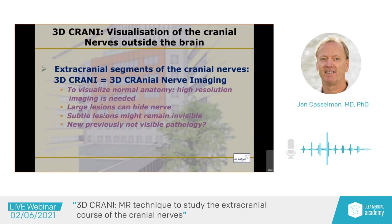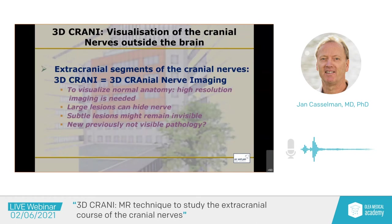But another problem is we see new things — new hyperintensities. This is pathology that was not seen previously; we couldn't see it. And now very often we come with these results and say: look at that nerve, it's completely abnormal. But now the clinicians have to find out what they're going to do with it. So now they are adapting to new pathologies and finding new ways to treat these patients.